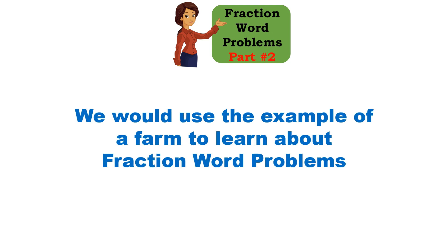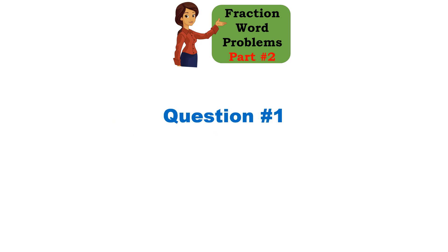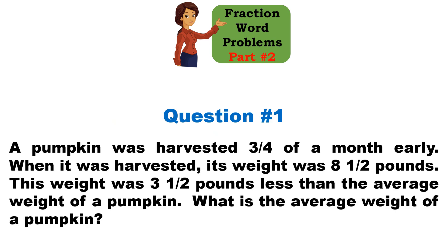We'll use examples from a farm to learn more about fractions and fraction word problems. Question number one: a pumpkin was harvested three-fourths of a month early. When it was harvested, its weight was eight and a half pounds. This weight was three and a half pounds less than the average weight of a pumpkin. What is the average weight of a pumpkin?